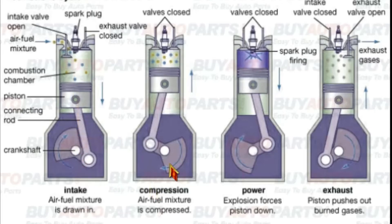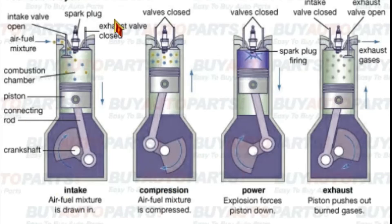Next, we have the compression stroke. The compression stroke means the inlet valve is closed. The piston travels from the bottom dead center to the top dead center. One revolution of 360 degrees is now complete, and the compression stroke is complete.